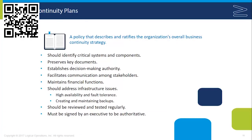Implementation of high availability and fault tolerance makes us more resistant to disasters — it's a frontline defense for business continuity. Creating and maintaining backups, also known as disaster recovery, is a second level of defense.